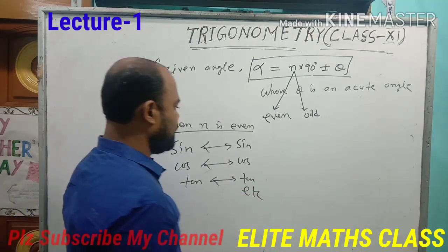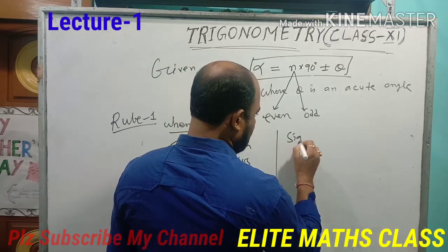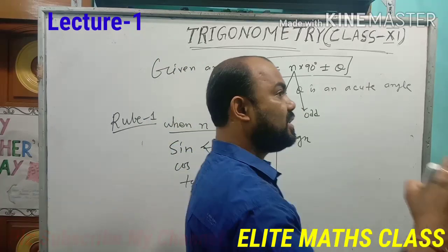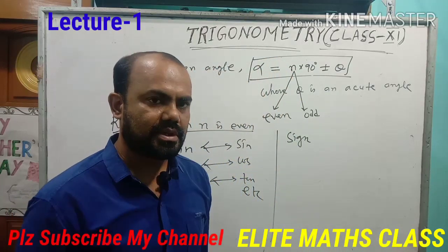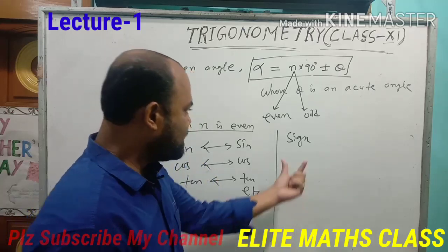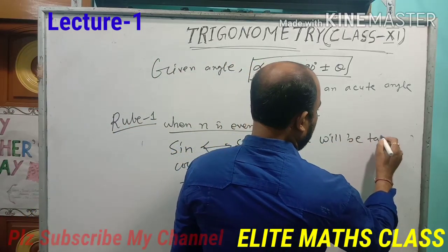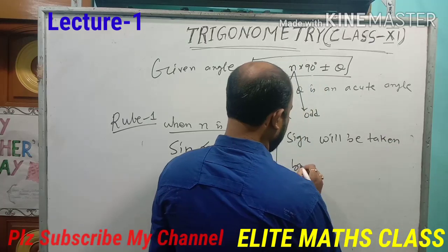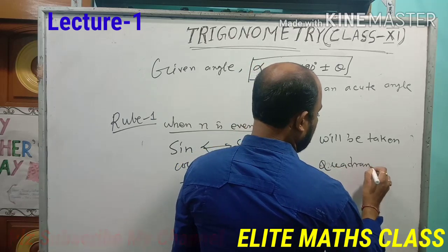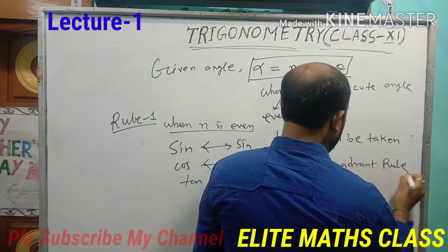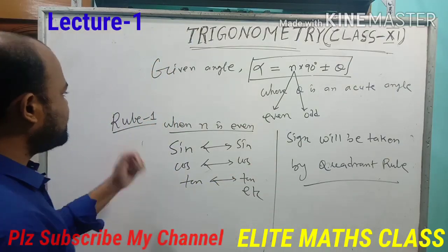I will explain this with an example. Next, remember: the sign — that is the quadrant rule — will determine what the sign of that value is. Say the angle is given as 12000 degrees and we want sin(12000°) — whether it is positive or negative, the sign will be taken by the quadrant rule. This is the first rule.